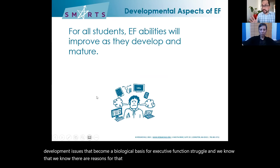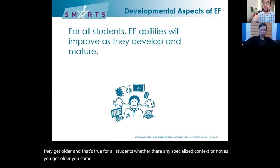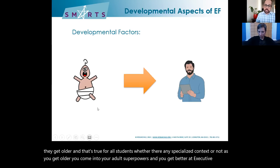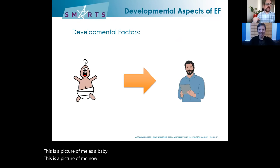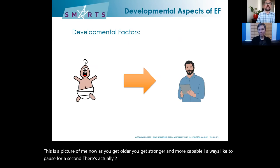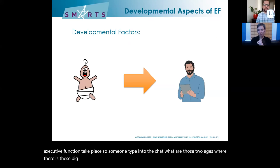However, all kids will get better at executive function as they get older — whether they're in a special ed context or not. As you get older, you come into your adult superpowers and get better at executive function. There are actually two ages where these big developmental leaps in executive function take place — toddlerhood and puberty.